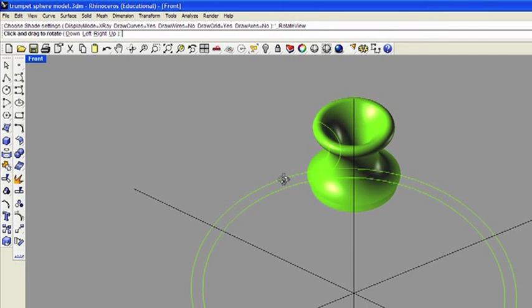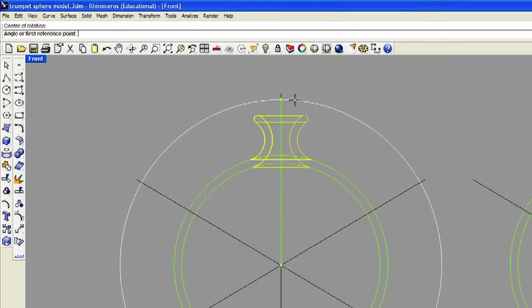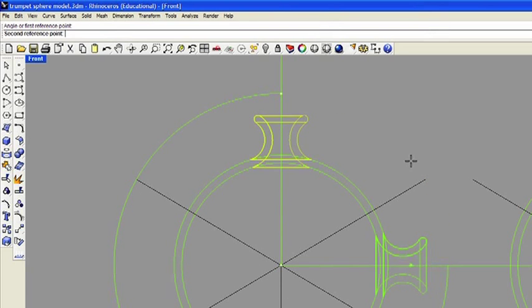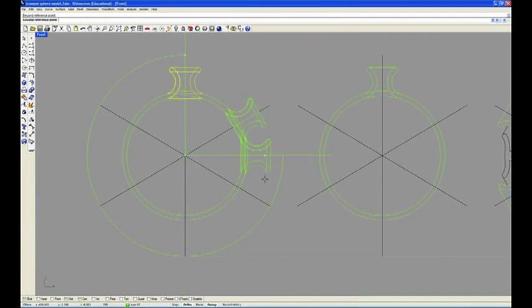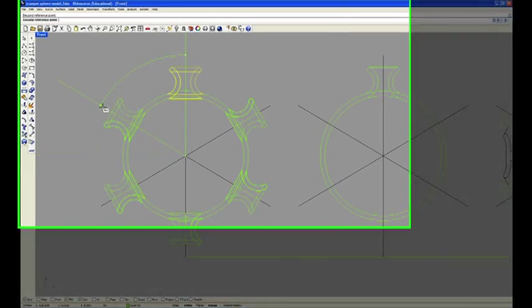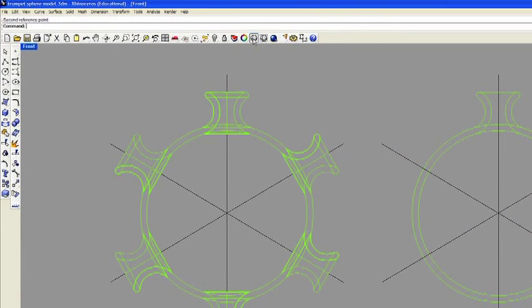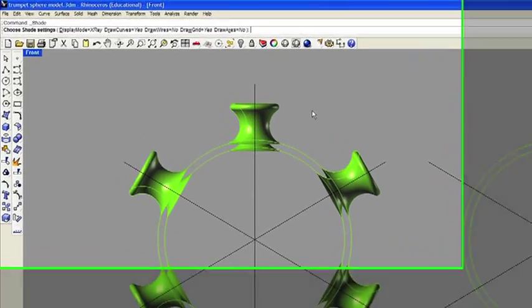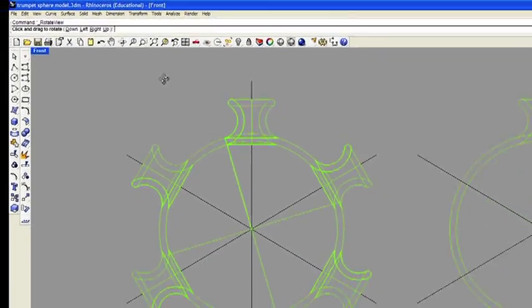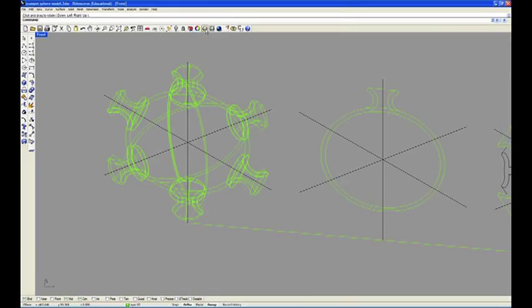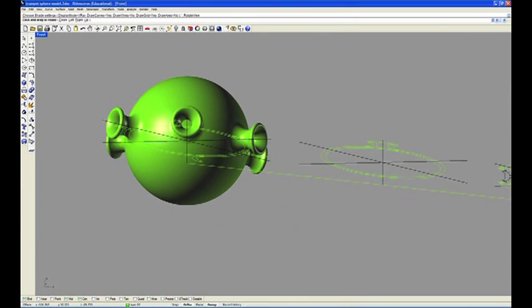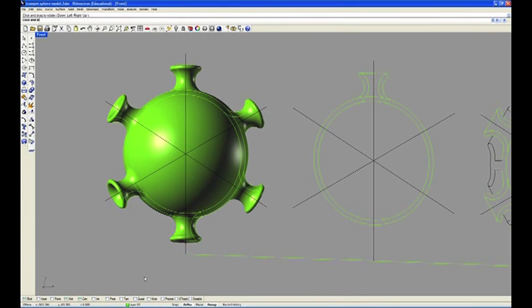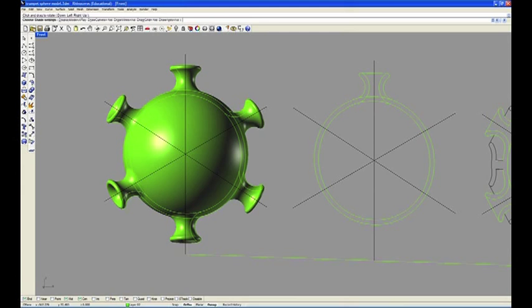Here you can see I've created a revolved feature, a trumpet shape, and I'm now copying that using the copy rotate command around the central axis to create an array of 6 trumpet shapes. It's quite easy to do. All the commands in Rhino are quite intuitive and it's an easy piece of software to get to grips with. It's used quite widely by industrial designers as well as artists and illustrators and sometimes for engineering applications too.